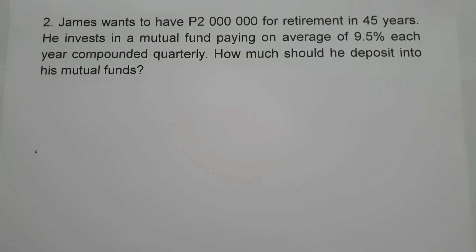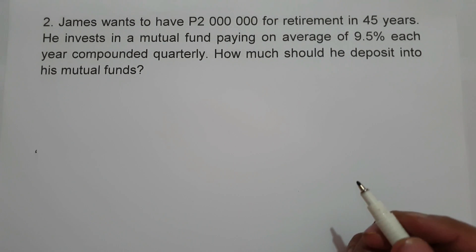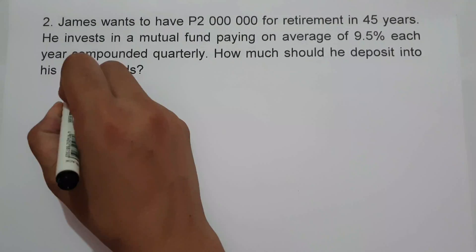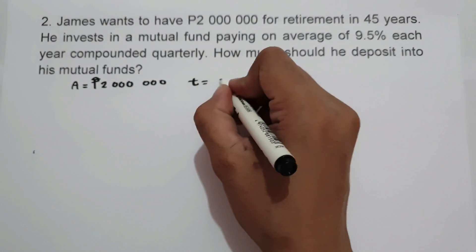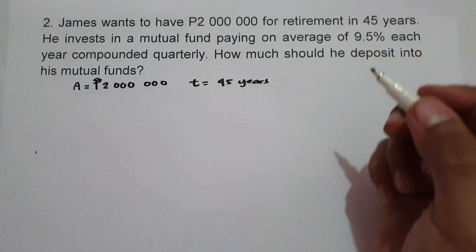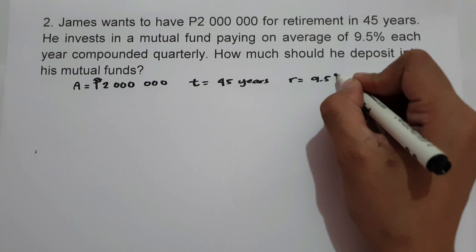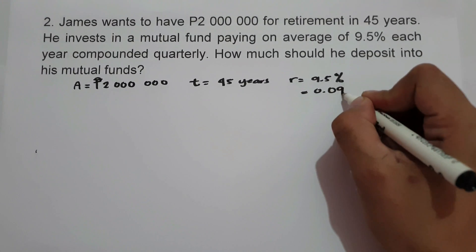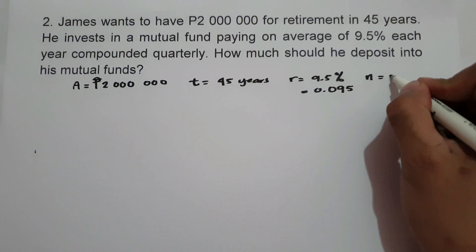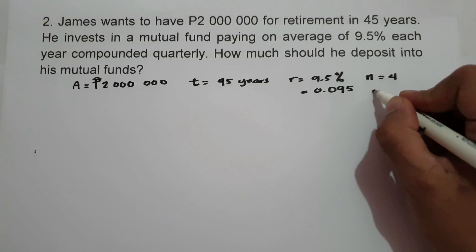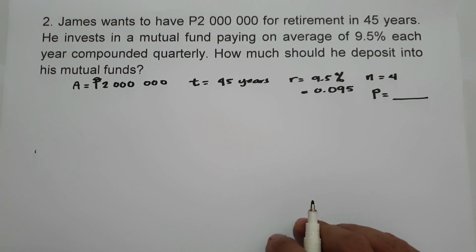For example number 2, James wants to have 2,000,000 pesos for retirement in 45 years. He invests in a mutual fund paying an average of 9.5% each year, compounded quarterly. How much should he deposit into his mutual fund? The given are: future value is 2,000,000, time is 45 years, interest rate is 9.5% or 0.095, and N is 4 since there are 4 quarters in a year. We are looking for the principal.